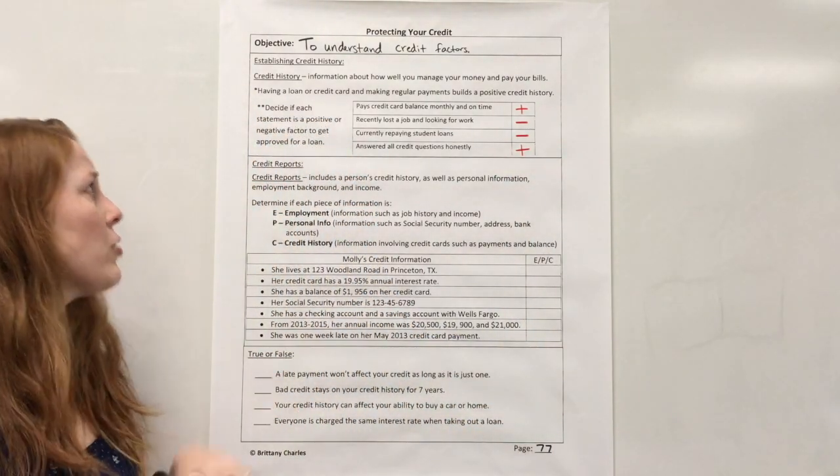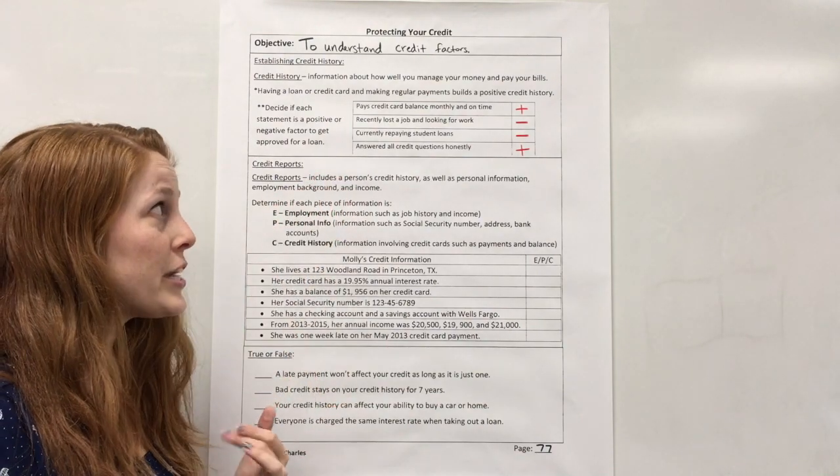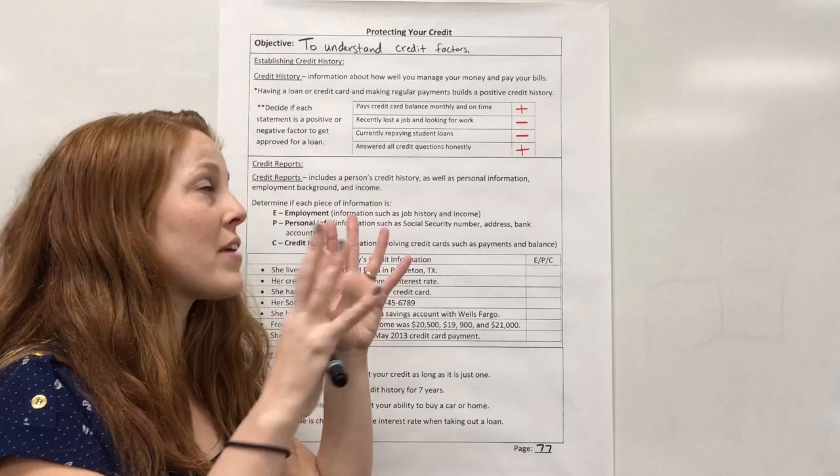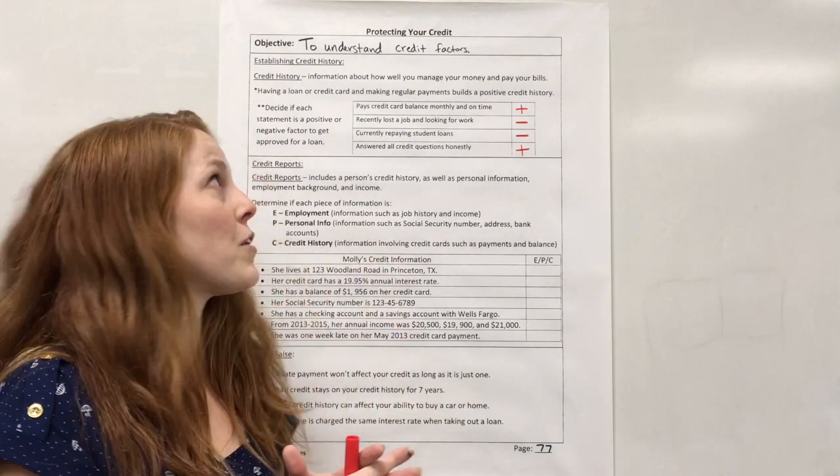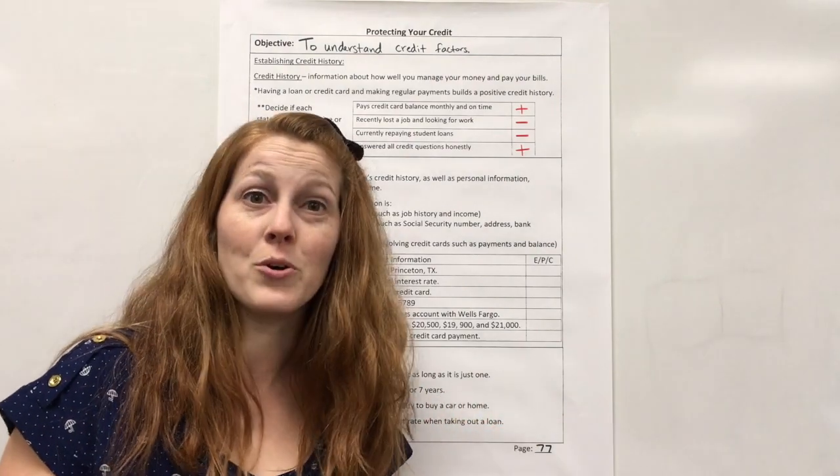Okay. Now credit reports. So a credit report includes a person's credit history as well as their personal information, employment, background, and income. Anything that might be important as far as your credit history and what they would need to know if they're going to give you a loan.